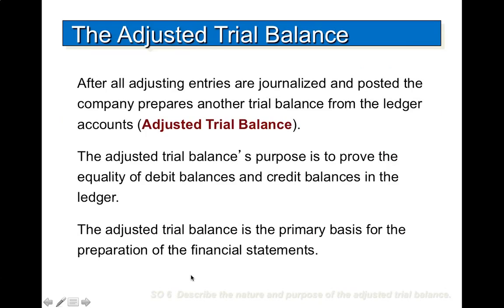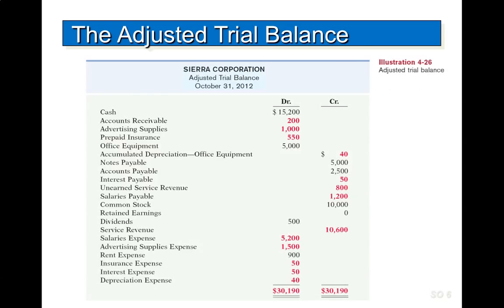The adjusted trial balance is created after all adjusting entries are journalized and posted. Its purpose is to prove the equality of debit balances and credit balances in the ledger. The adjusted trial balance is the primary basis for the preparation of financial statements. Here is an example of the adjusted trial balance — the accounts highlighted in red are the ones that have been affected by the adjusting entries.